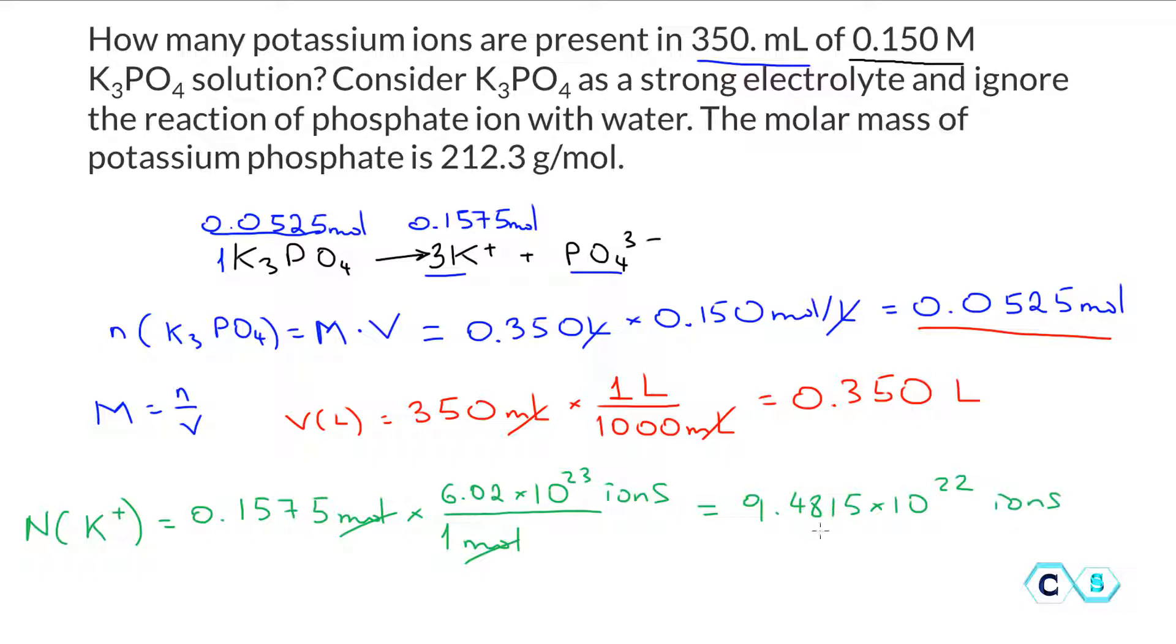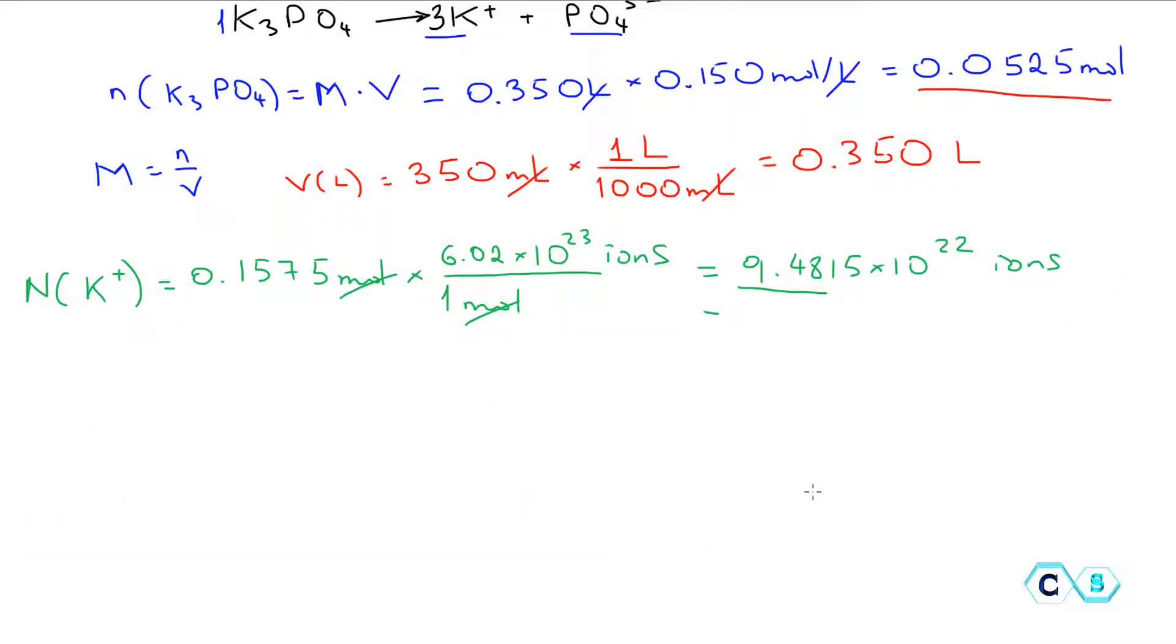Finally, we're going to go based on the significant figures because we had initially three significant figures from the concentration. We're going to keep three here, so I'm just going to keep these three numbers. This is going to be equal to 9.48 times 10 to the 22nd ions of K+.